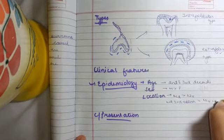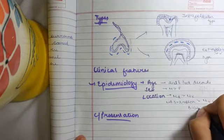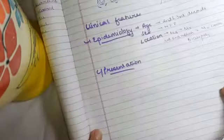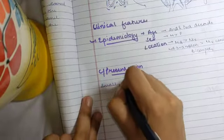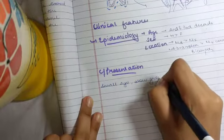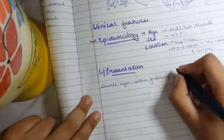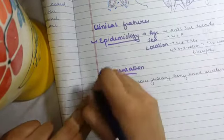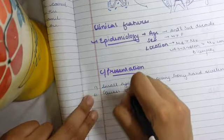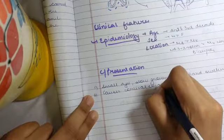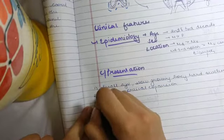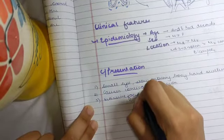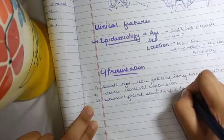Then in the maxillary canine, then in the bicuspids. Now let's talk about clinical presentation. This is basically a small cyst, slow growing, and it presents as a bony hard swelling. It causes cortical expansion, then also leads to massive facial swelling and derangement of occlusion.